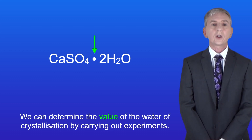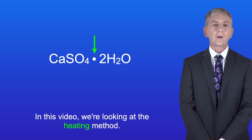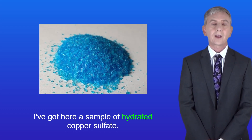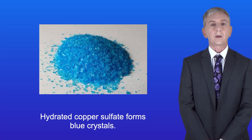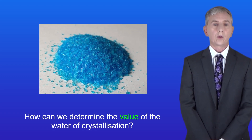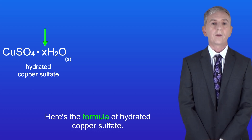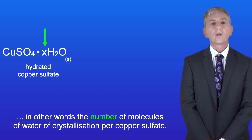We can determine the value of the water of crystallization by carrying out experiments, and in this video we're looking at the heating method. I've got here a sample of hydrated copper sulfate, which forms blue crystals. Here's the formula of hydrated copper sulfate and we're trying to determine the value of x — in other words, the number of molecules of water of crystallization per copper sulfate.